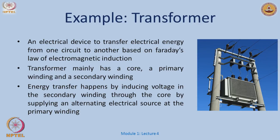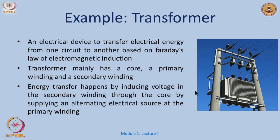The next example comes back to the electrical domain: the transformer. A transformer is an electrical device which transfers electrical energy from one circuit to another, working on the law of electromagnetic induction introduced by Faraday. It has a core, a primary winding, and a secondary winding. Energy transfer happens by inducing voltage in the secondary winding via the core, and the core gets its energy through an electrical source in the primary winding.